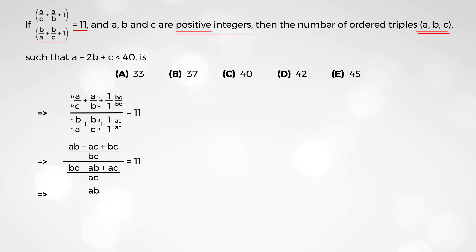And you have ab plus ac plus bc over bc. Invert and multiply. So, you have ac over bc plus ab plus ac. And that all equals 11.